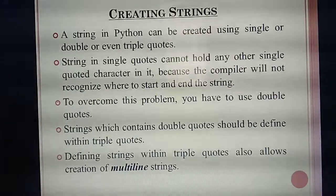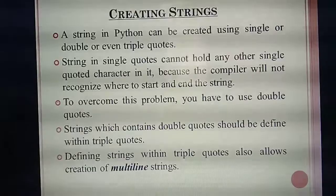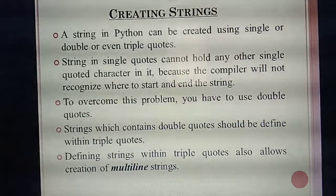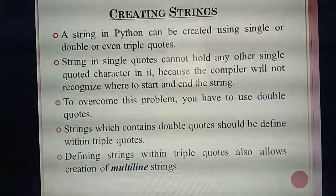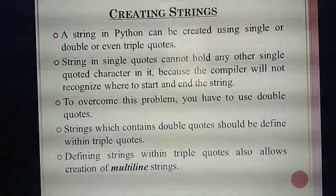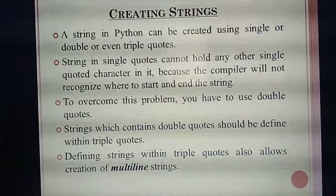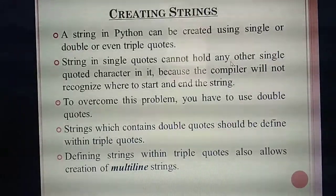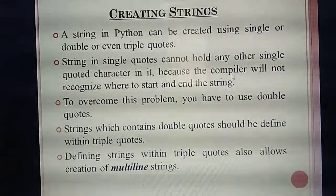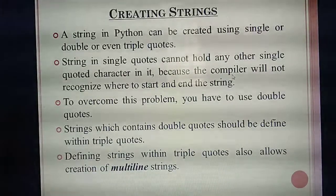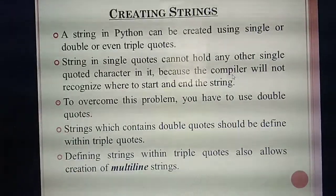Next we are going to study how to create strings in a Python program. If you have mentioned a string or sentence in a program, you should mention it in either single quotes, double quotes, or triple quotes — you already know this from the example. Why do we use double quotes? Single quotes are normally used, but sometimes we need double quotes.